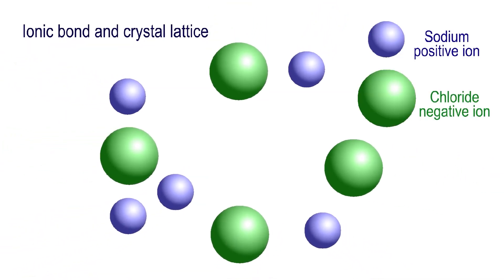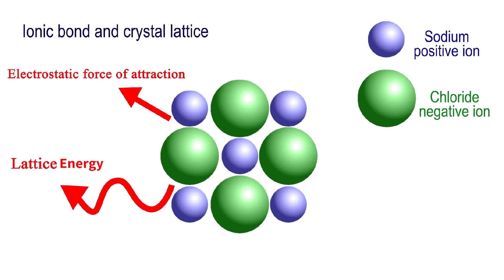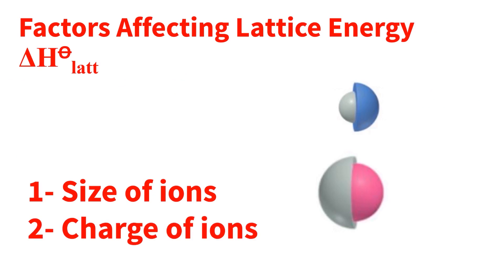We saw in the previous video when positive and negative ions join together to form a crystalline lattice, an amount of energy is released. We call it lattice energy. The electrostatic forces of attraction between ions are responsible for the releasing of this lattice energy. This is why the size and the charge of ions both would affect the lattice energy.